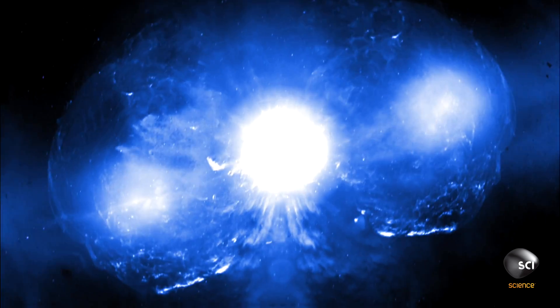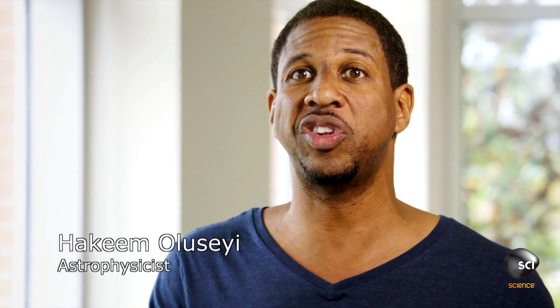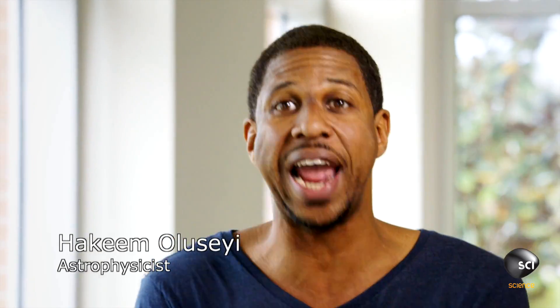Then, gravity seizes control of the star's core. A star is already crushing itself down under gravity, but what stops it is the pressure of the light coming out of it.